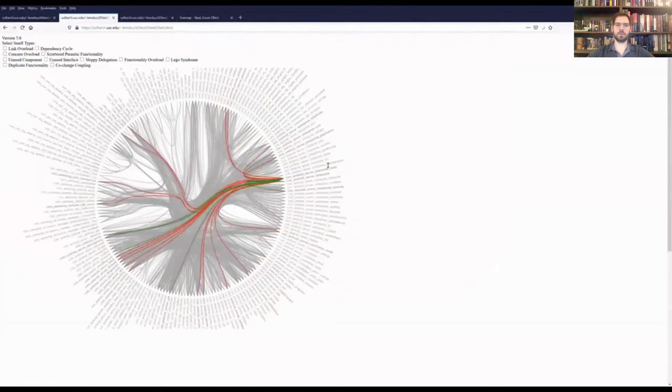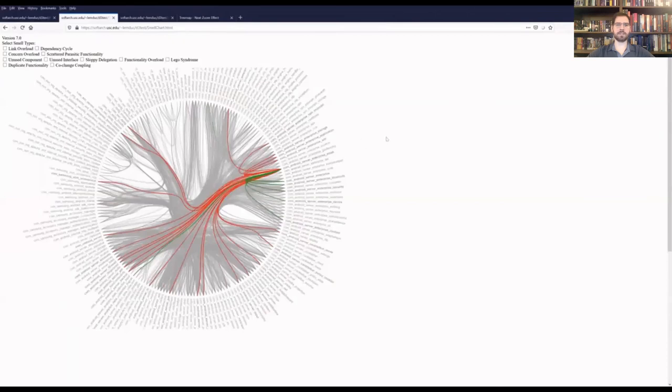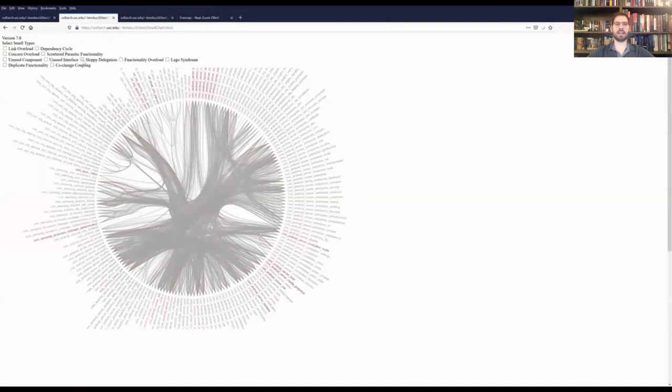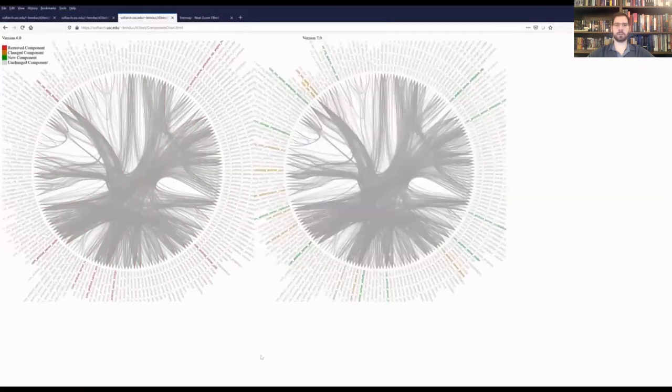In the Smells view, one is still able to see the incoming and outgoing dependencies of a single version, but is also able to select the names of individual types of smells, which will highlight the components involved in those smells.